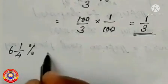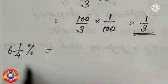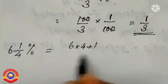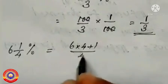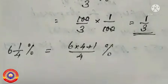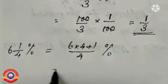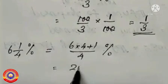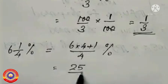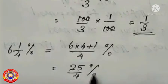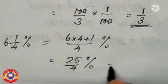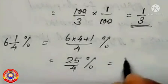Next question: 6 and 1 by 4 percentage. First we have to convert 6 and 1 by 4 into an improper fraction, that is 6 into 4 plus 1 by 4 percentage. 6 into 4 is equal to 24, and 24 plus 1 is equal to 25. So 6 and 1 by 4 percentage is equal to 25 by 4 percentage.